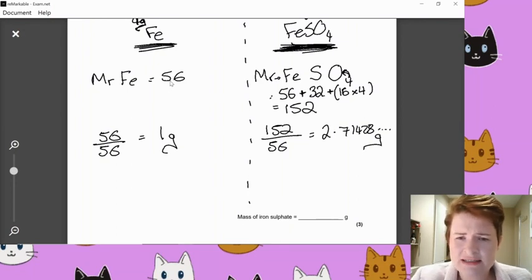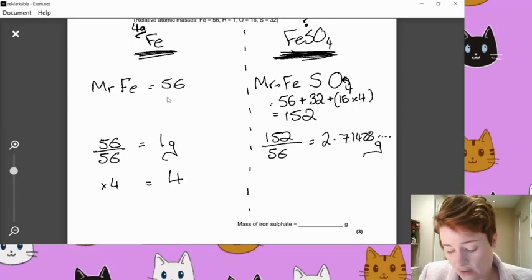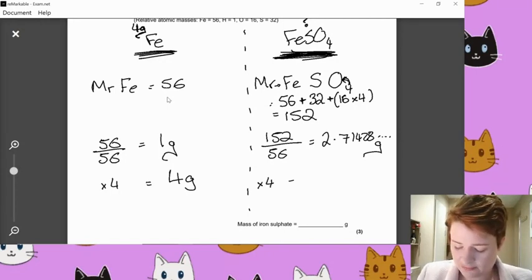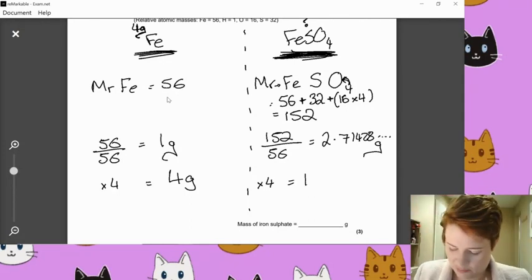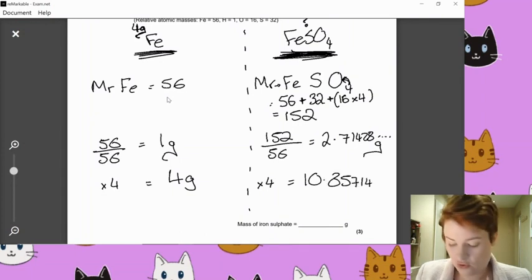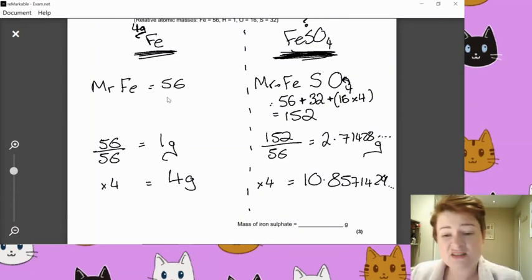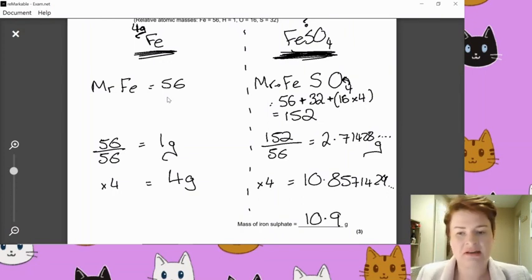So I'm going to do 152 divided by 56 equals 2.714285 blah, blah, blah, blah. And all that I'm going to do is I'm just going to leave that on my screen, because then I won't get any rounding errors there. Grams as well. The question originally said we've got four grams of the iron, so I'm just going to times this side by four to get four grams. Whatever I do to one side, I must do to the other. So that 2.7 blah, blah, blah, also multiplied by four equals 10.8571429 blah, blah, blah.